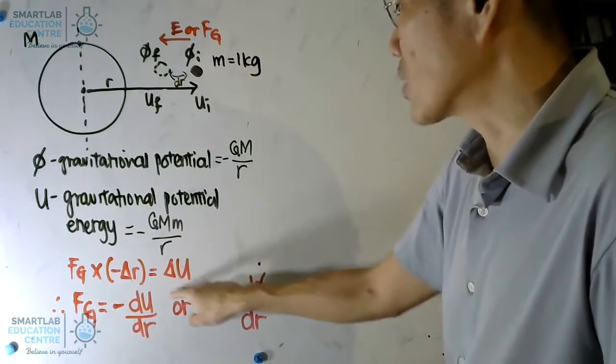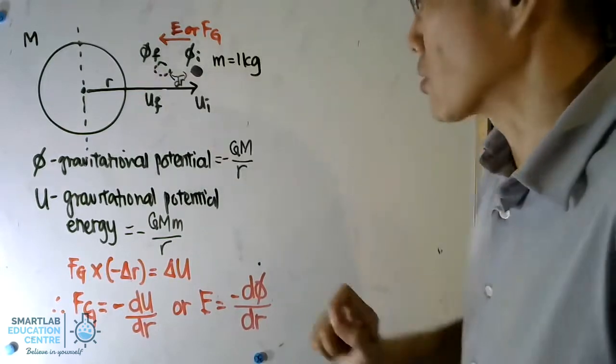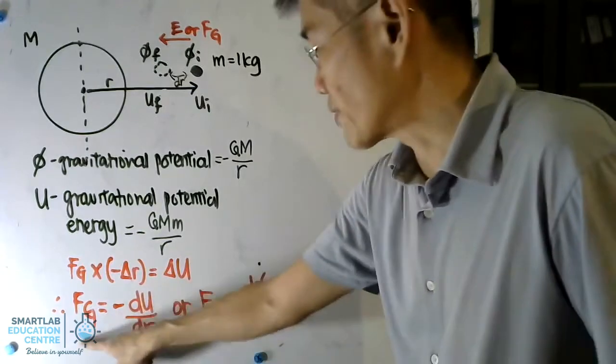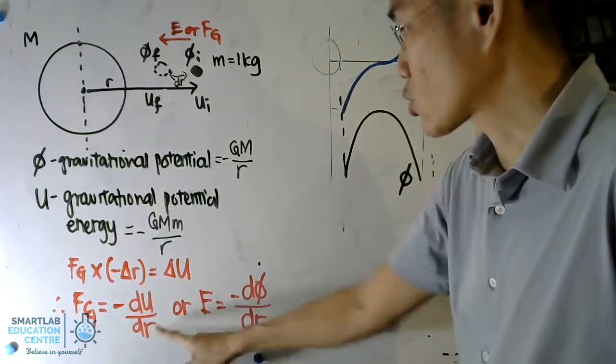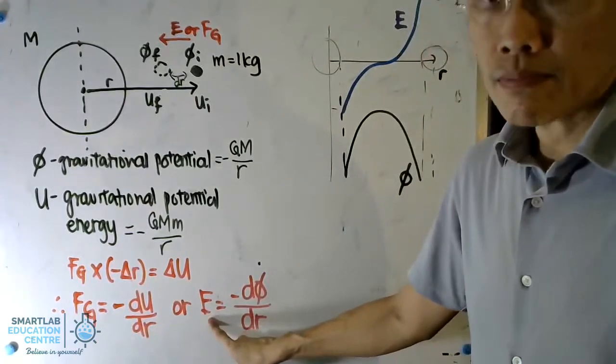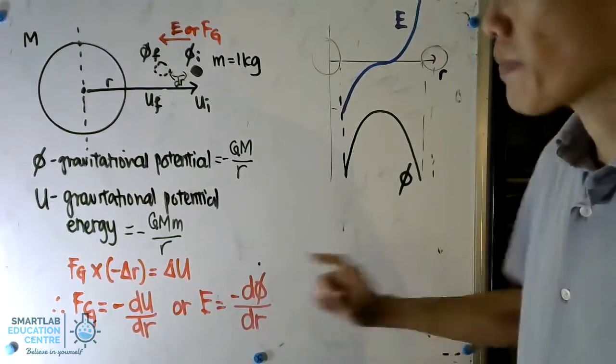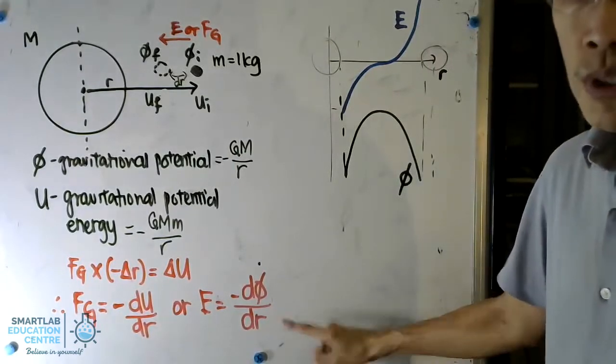That will be equal to the change in terms of your gravitational potential. From there, we can have this equation and this formula. From this expression, we can relate the gravitational field strength versus the gravitational potential. This is a very important formula that you could use.